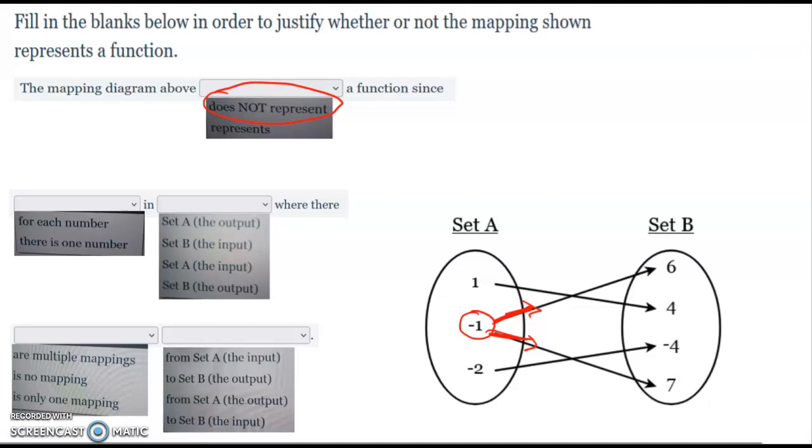So you'll say this does not represent a function. The mapping diagram above does not represent a function since for one of the numbers, there is one number, negative one, in Set A, the input—still Set A, the input, because that'll always be A, it'll always be input—there are multiple mappings because it's more than one, two...